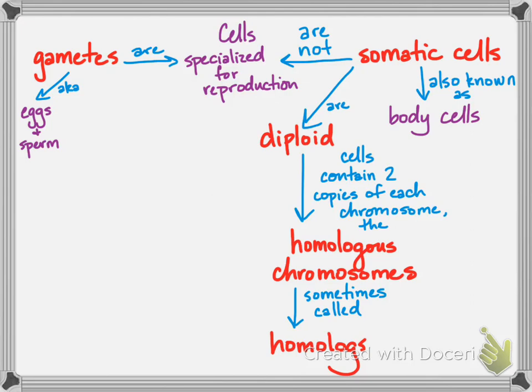All humans have 22 pairs of homologous chromosomes — these are the autosomes, or non-sex chromosomes. The sex chromosomes in a woman are homologous: those are the two X's. But men have an X and a Y as their sex chromosomes, so we would say those are non-homologous — they do not have the same genes on them. For example, the X carries genes for male pattern baldness and color blindness, while the Y chromosome does not have those genes.